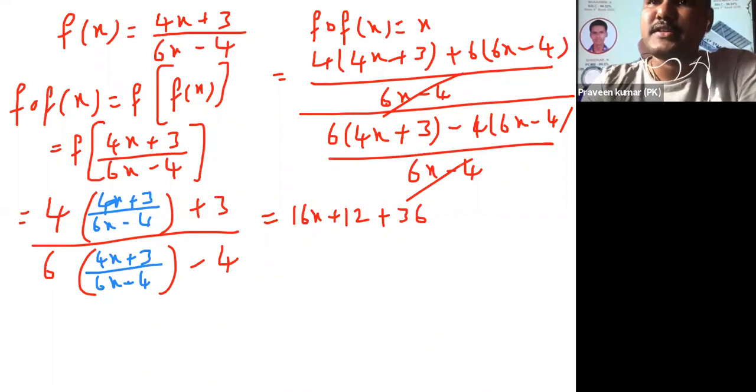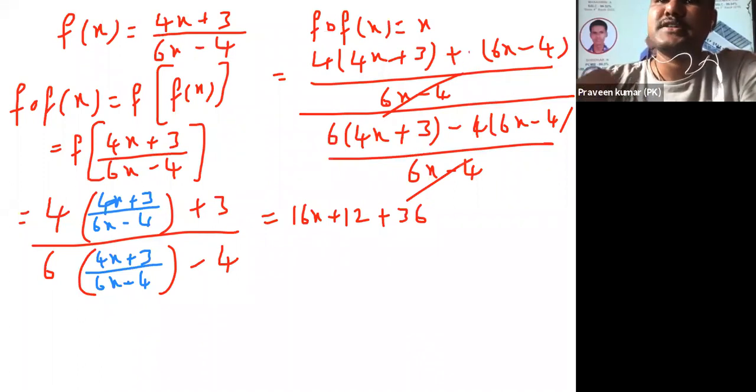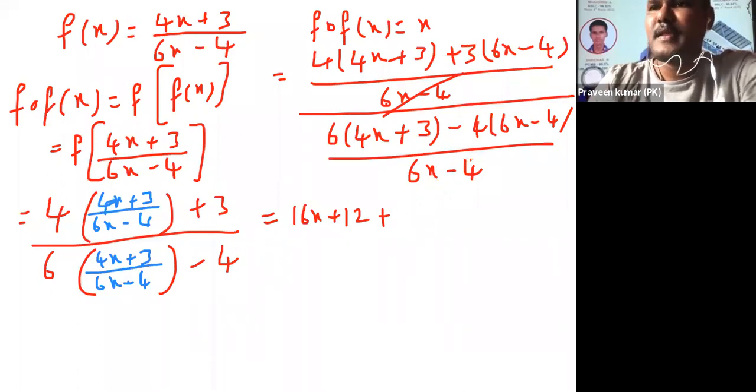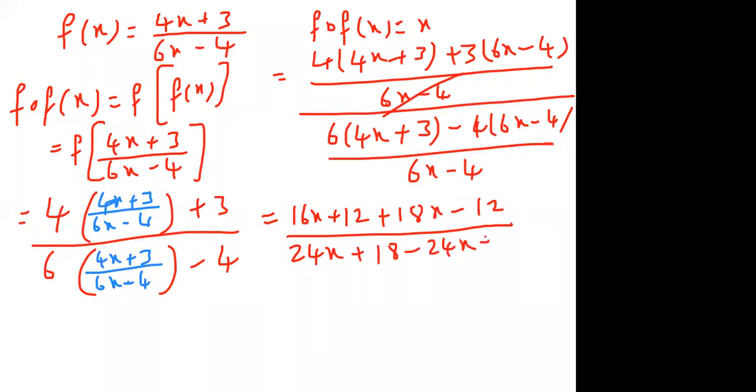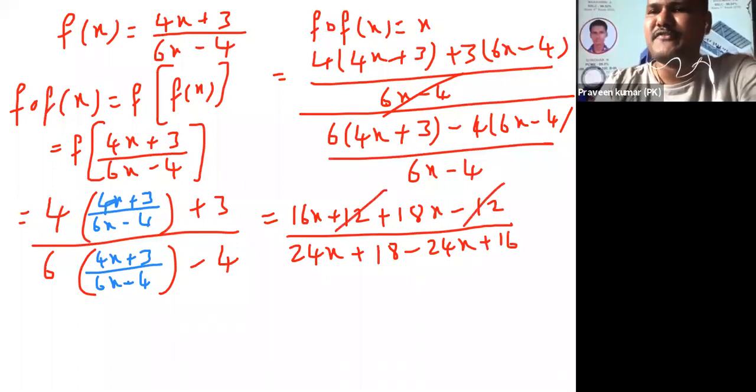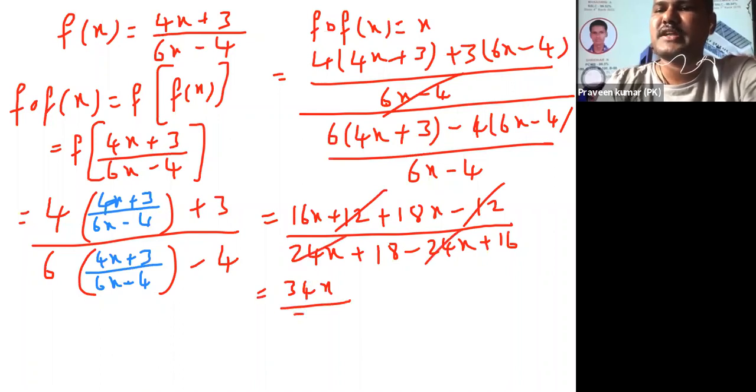Plus 3. Now correct, this is 3 or 6, so 3×6 are 18x minus 3×4 are 12, all by denominator: 6×4 are 24x, 6×3 are 18 minus 4×6 are 24x. 12 total can cancel. What is left? Numerator 34x, denominator 24x. 24x cancel, 34 is left. Both cancel, what is the answer? x.